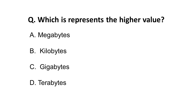The next question asks which represents the highest value of memory size. Remember these four important memory sizes that every UGC NET or SET aspirant should know. As we know, 1 GB is more than a megabyte (MB), and MB is more than a kilobyte (KB). The highest value here is terabyte (TB). The order is: kilobyte, megabyte, gigabyte, and terabyte.